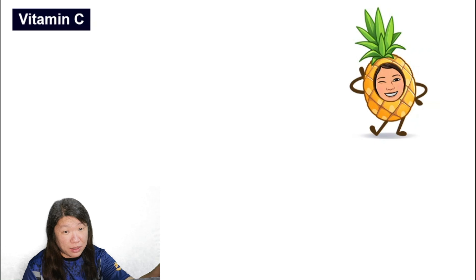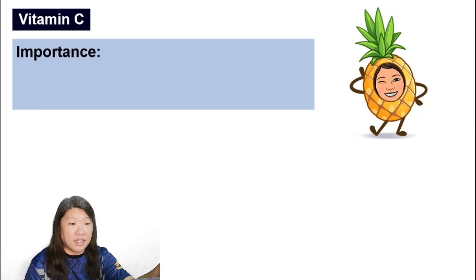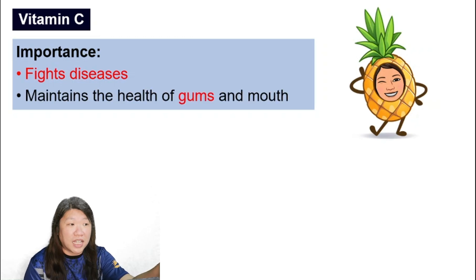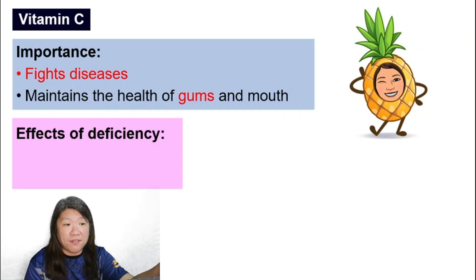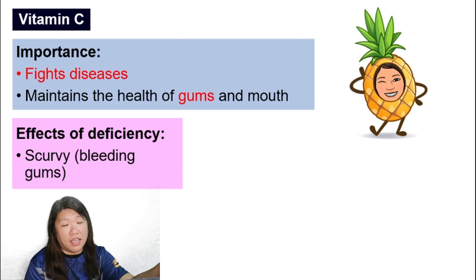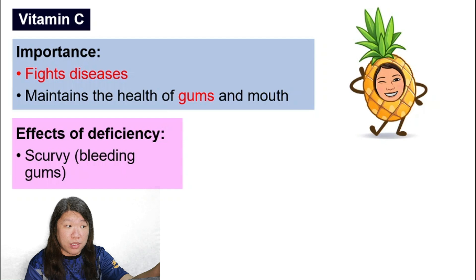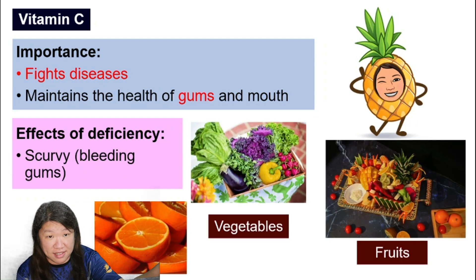Vitamin C is important for fighting diseases and maintaining the health of gums and mouth. If you do not have enough vitamin C, you might develop scurvy, where the gums underneath your teeth may bleed. Sources of vitamin C include vegetables and fruits, especially citrus fruits like oranges.